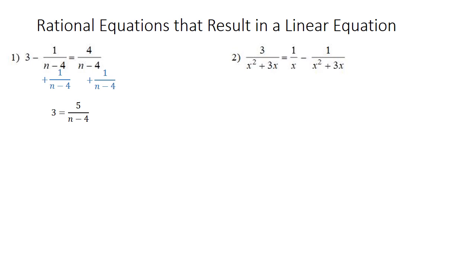We need to get the 3 so it's also over n minus 4. First I'm going to write it over 1 so it's like a fraction. Then I'm going to multiply it by n minus 4 over n minus 4. So we're distributing the 3 into the parenthesis. So we get 3n minus 12 over n minus 4 equals 5 over n minus 4.